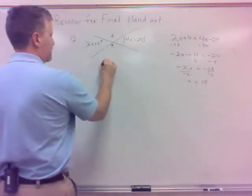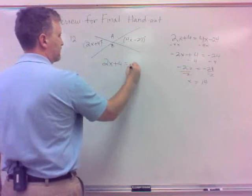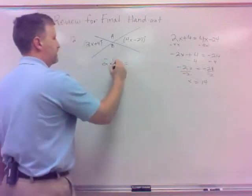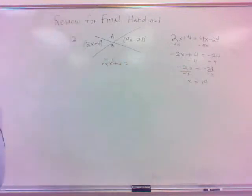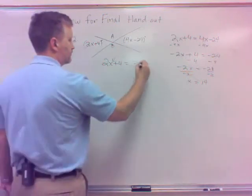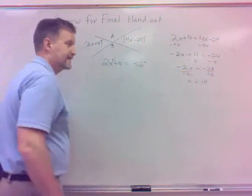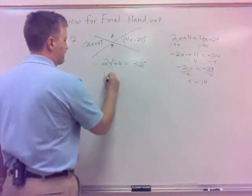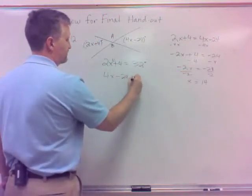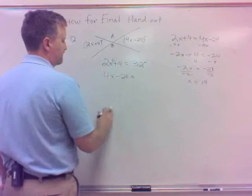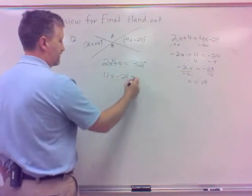And so the 2x plus 4 angle would be, if I know x is 14, what's that? 2 times 14 is 28, plus 4, 32. 32 degrees. Then the 4x minus 24, well, it better be the same. If I do 4 times 14, that's 56, minus 24, yeah, that's 32.